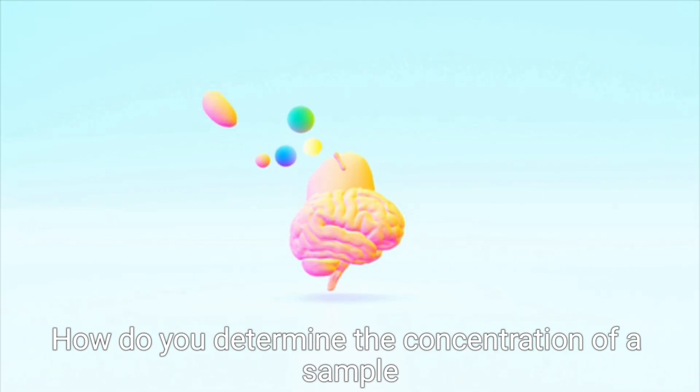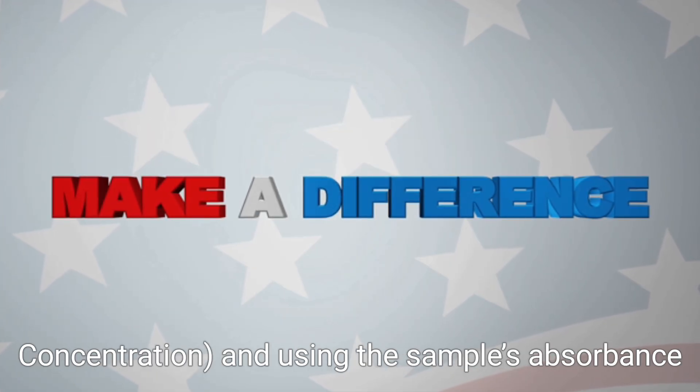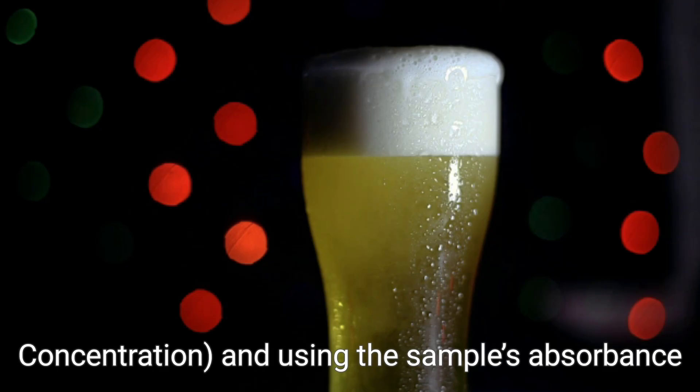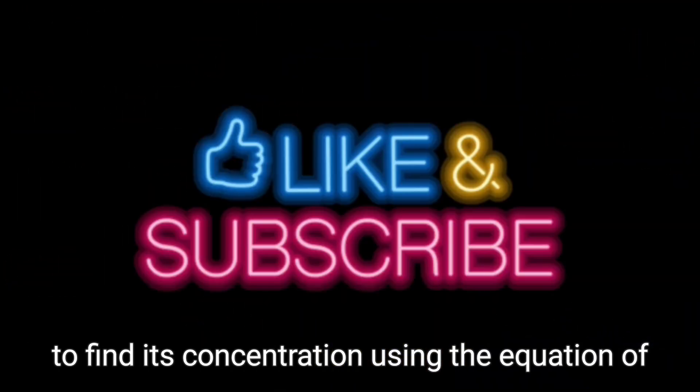Method application. How do you determine the concentration of a sample using UV? By preparing a calibration curve, absorbance versus concentration, and using the sample's absorbance to find its concentration using the equation of the line.